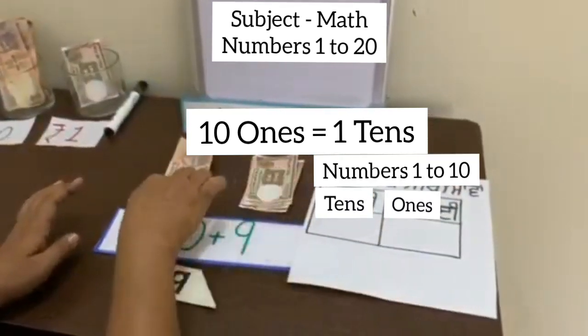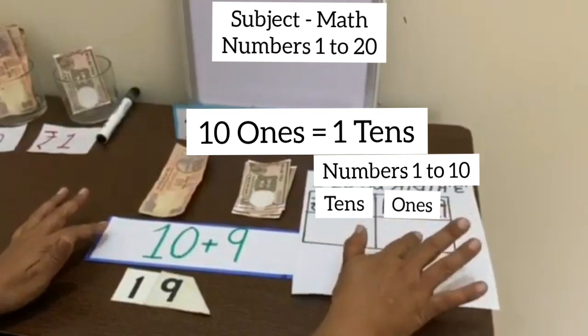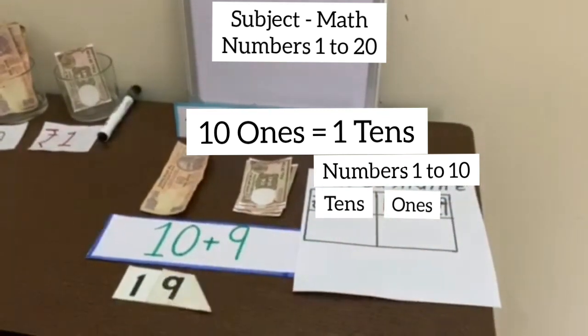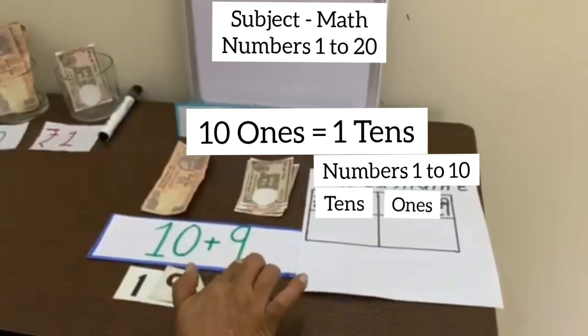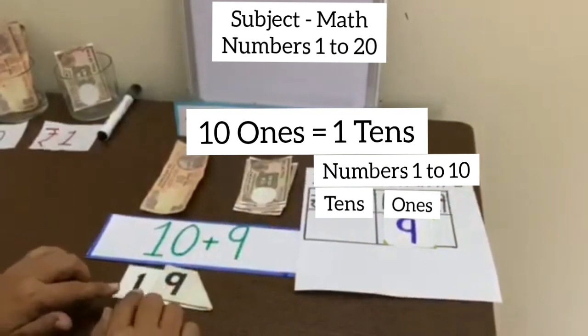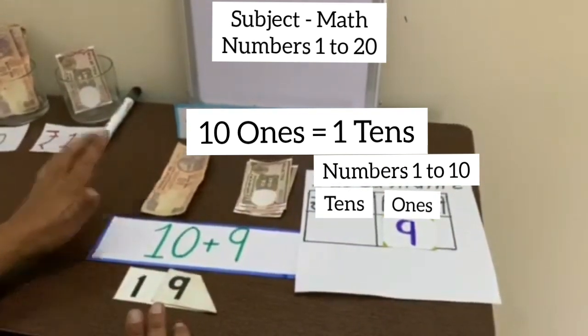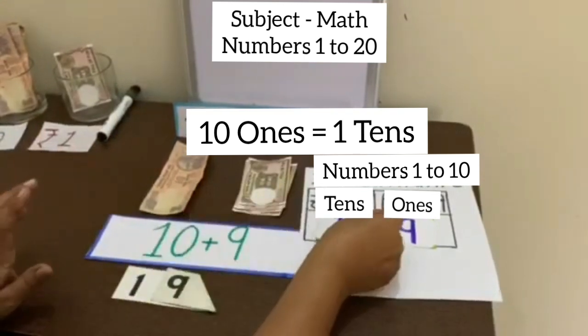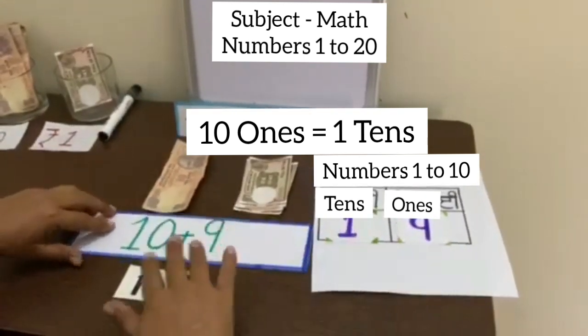Now let us place 1s and 10s on this place value chart. Here we have 9 1s, that is 9 notes of rupees 1. So we will place 9 at the 1s place. And how many notes of 10s we have? 1 note. So at 10s place there will be 1. So in numbers 19 and in words it is 19.